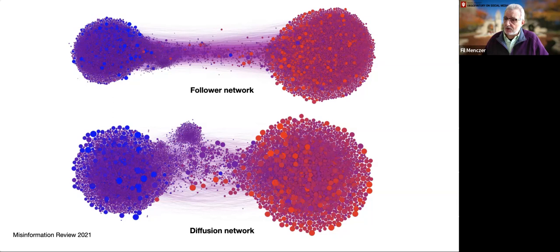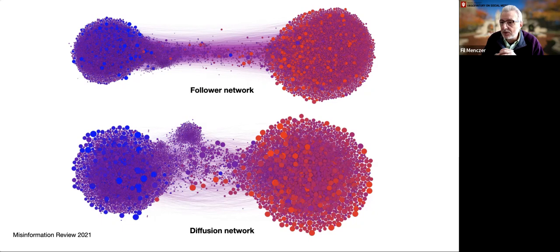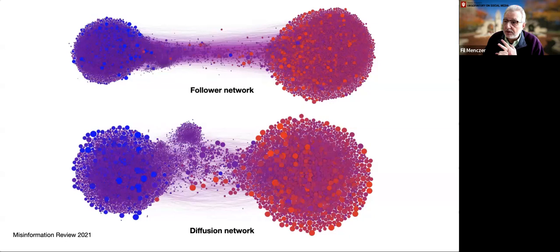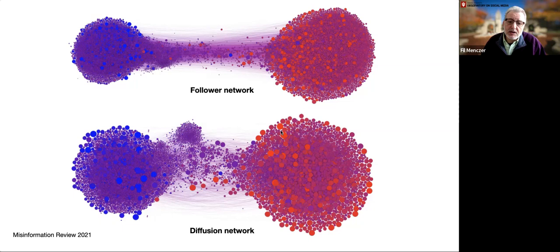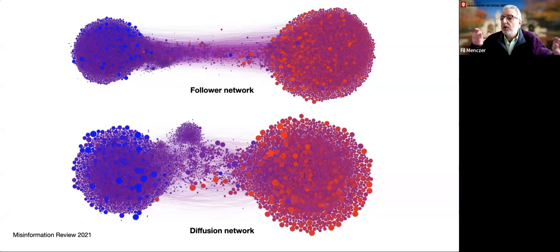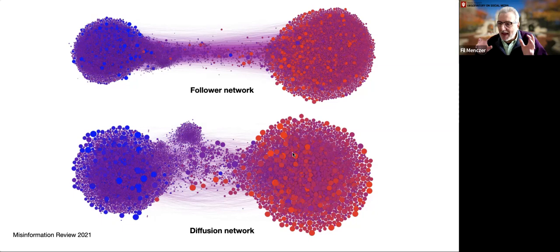When we look at the community structure of diffusion networks in US politics, we see — and have seen now for ten years — a very robust echo chamber structure: two major communities, right wing and left wing, that are very dense and homogeneous. This is true whether you look at the Twitter follower network or the diffusion network through retweets, quotes, or mentions. The size of the nodes here is proportional to the fraction of links shared pointing to low credibility sources — the big nodes responsible for more misinformation also tend to be included in these echo chamber communities.